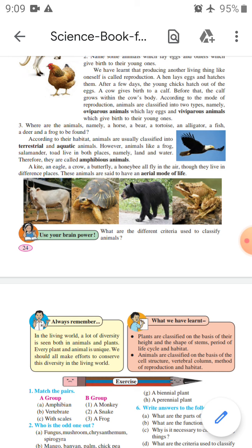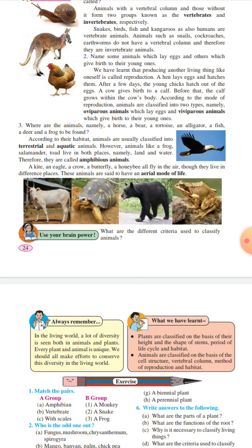What we have learned in this whole chapter: we have studied about the diversity of plants and animals. Plants are classified on the basis of their height and the shape of stems, period of life cycle, and habitat. Animals are classified on the basis of cell structure, vertebral column, method of reproduction, and habitats.